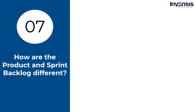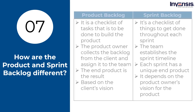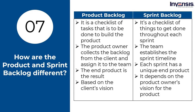How are the product and sprint backlog different? The product backlog is a checklist of tasks to be done to build the product; the product owner collects it from the client and assigns it to the team, with the end product based on the client's vision, and the product owner maintains it until the project is completed. The sprint backlog, on the other hand, is a checklist of things to get done throughout each sprint; the team gathers it from the product owner and establishes the sprint timeline, each sprint has a unique end product, it depends on the product owner's vision, and the team adds backlogs to each new sprint.